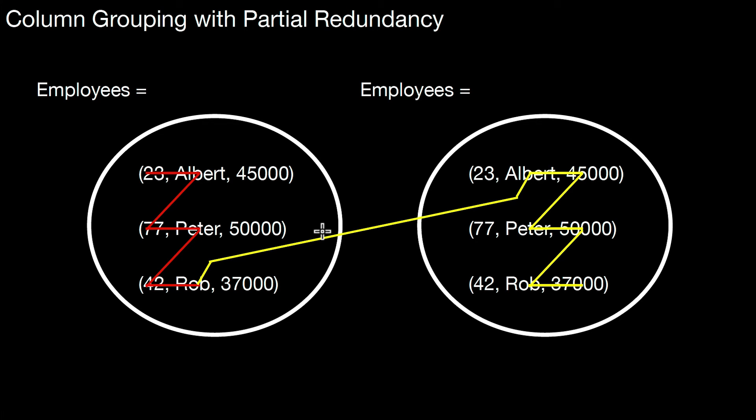Again to better show the effect I depicted the employees relation twice. So what we do is we have one curve. I just depicted the two parts of the curve in different colors. So the first part of the curve just linearizes the first two attributes of all tuples in row layout. Then we revisit the relation but then we linearize the second and the third attribute. Again in row layout. So this means the values of this attribute, the name column, are linearized twice. We have redundancy for that.